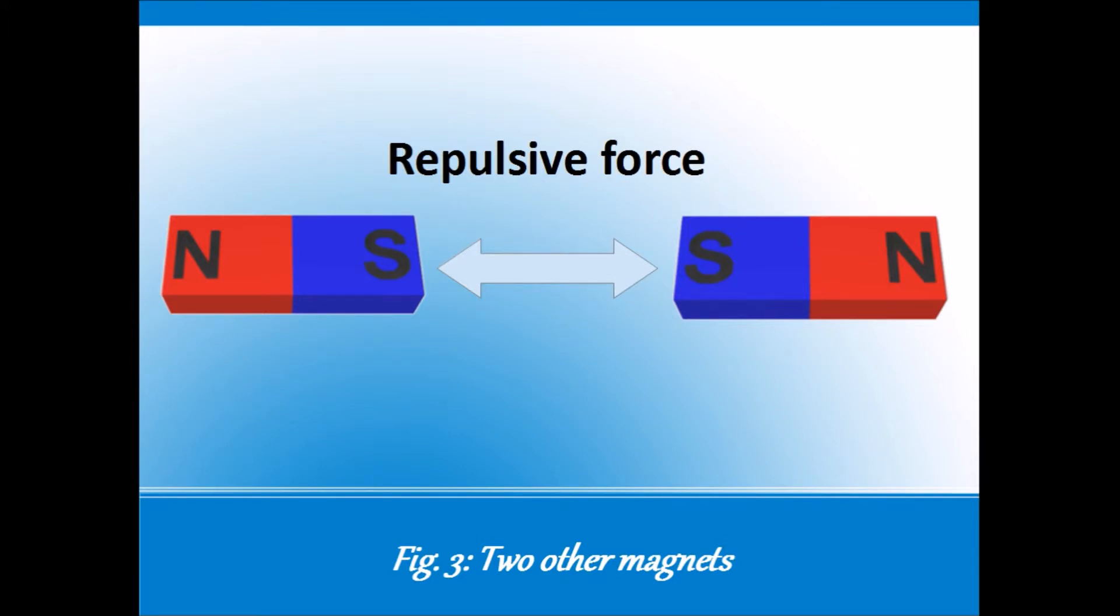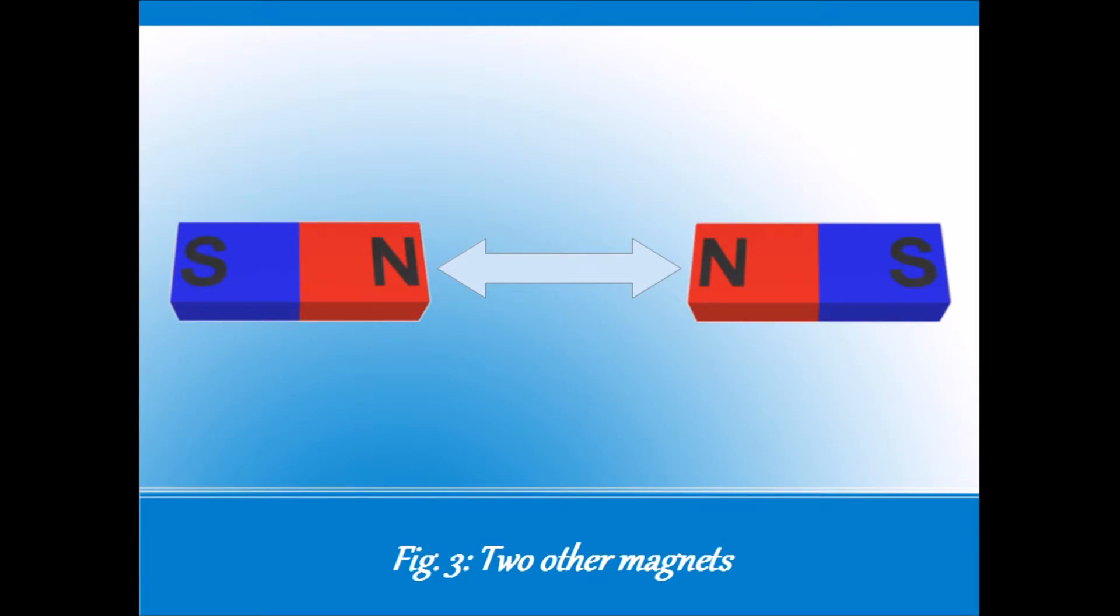Not repulsive as in disgusting. The magnets just don't want to be near each other. This also happens when you put the north pole of one magnet against the north pole of the other. Again, they repel.